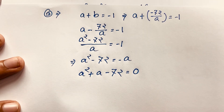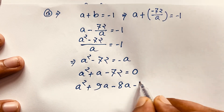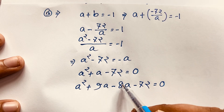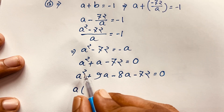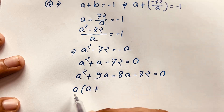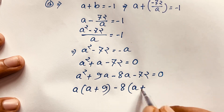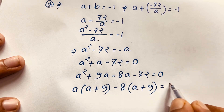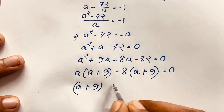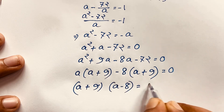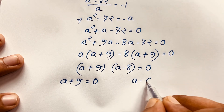Now I factor by splitting the middle term: a squared plus 9a minus 8a minus 72 equals 0. Here 9 times 8 equals 72 and 9 minus 8 equals 1. Taking a common from the first two terms: a(a+9), and taking negative 8 common from the last two: minus 8(a+9) equals 0. So (a+9)(a−8) equals 0, giving two cases: a plus 9 equals 0 or a minus 8 equals 0.